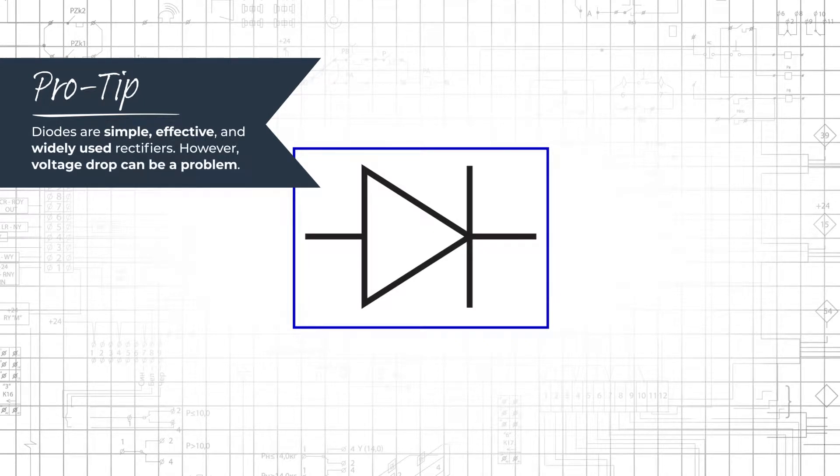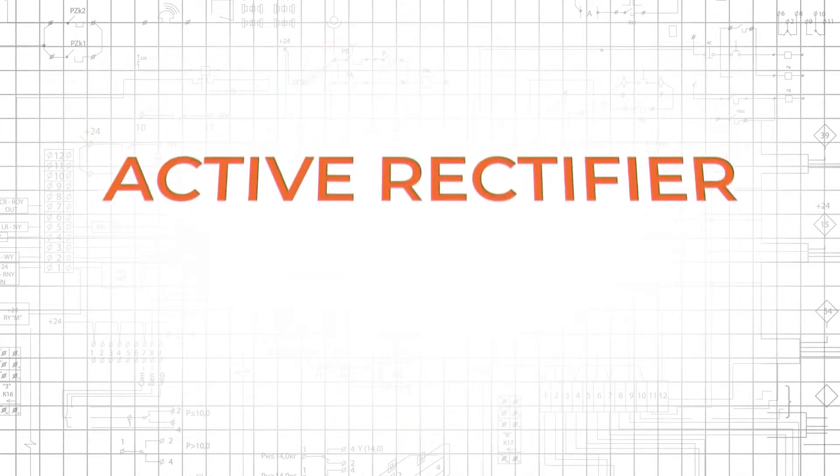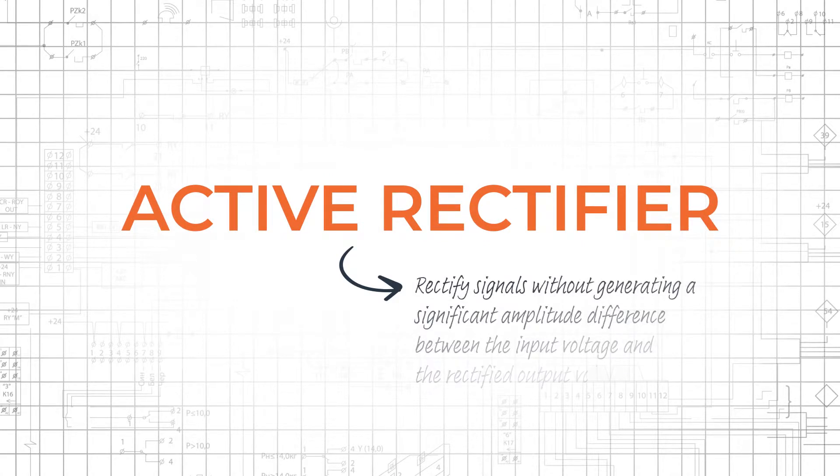However, in some applications the diode's voltage drop can be problematic. In this video we'll discuss the active rectifier, which can rectify signals without generating a significant amplitude difference between the input voltage and the rectified output voltage.